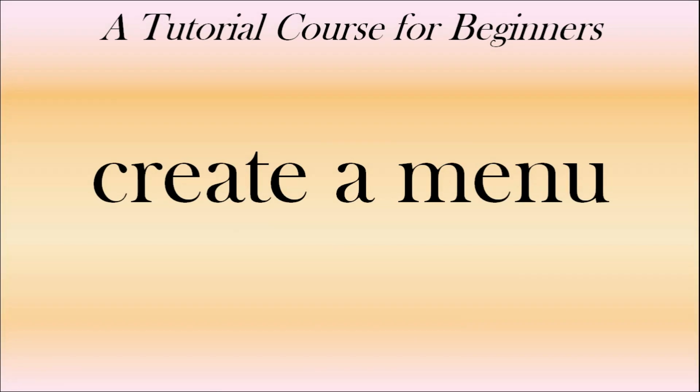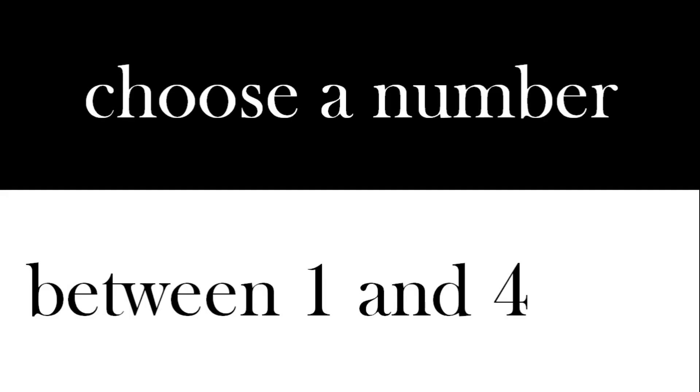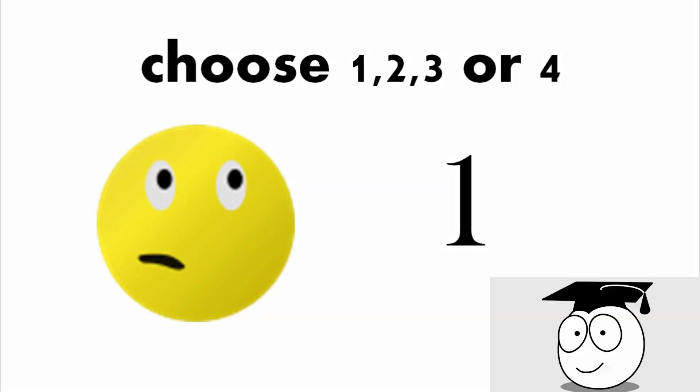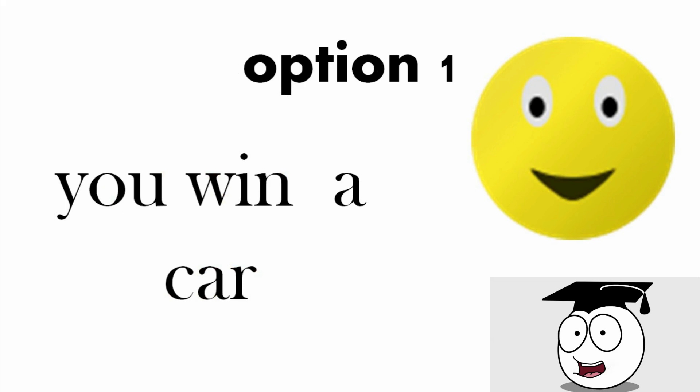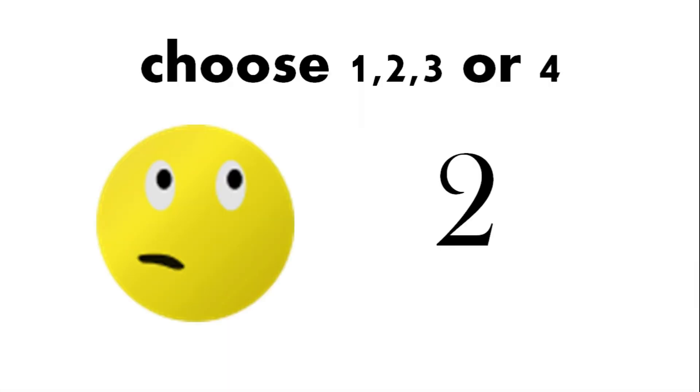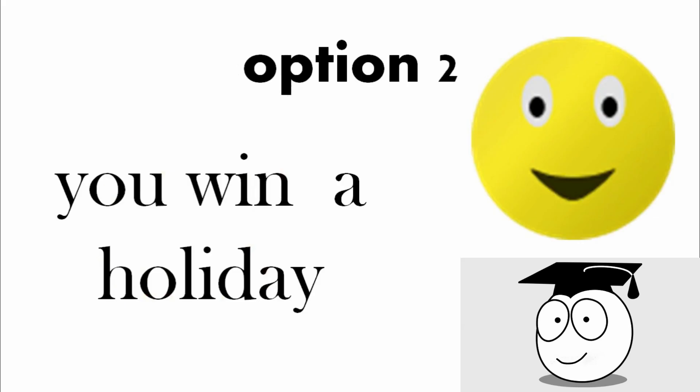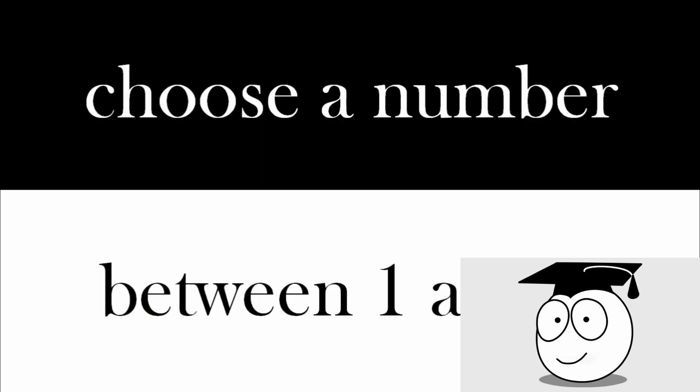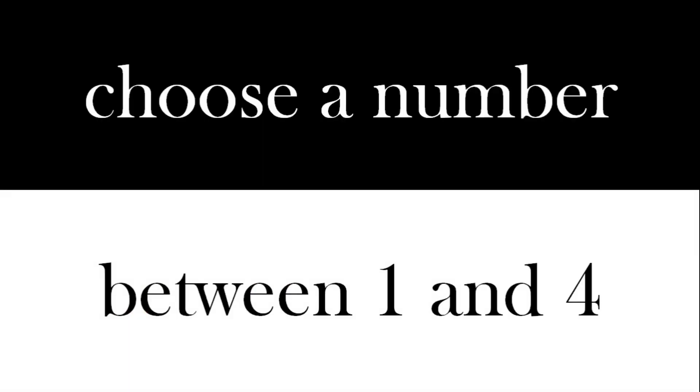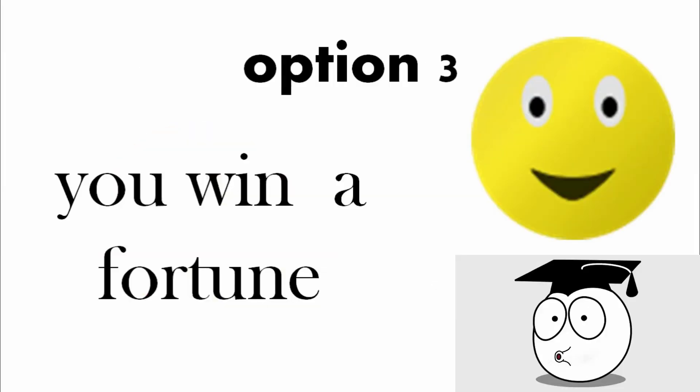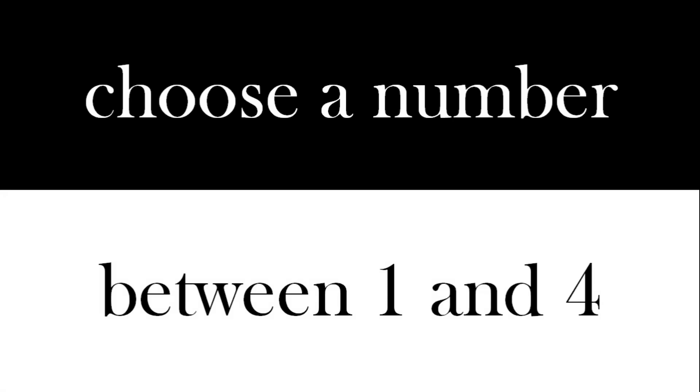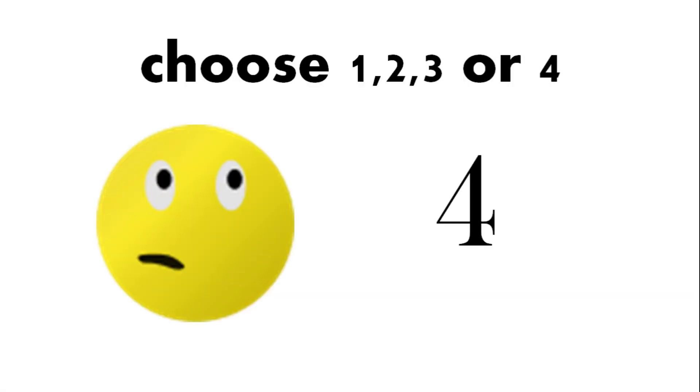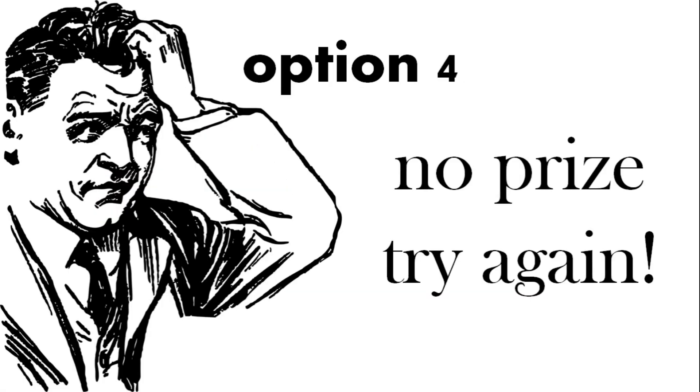So here's the goal. Choose a number between one and four. One, you win a car. Choose a number between one and four. Two, you win a holiday. Choose a number between one and four. Three, you win a fortune. Choose a number between one and four. Four or no prize, try again.